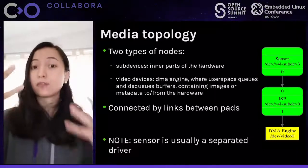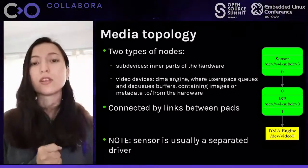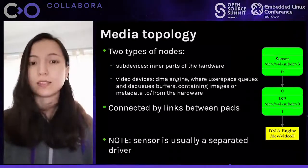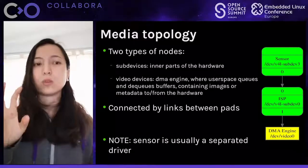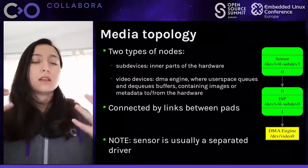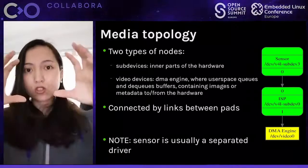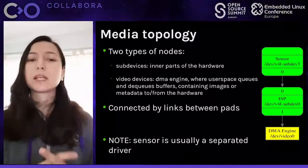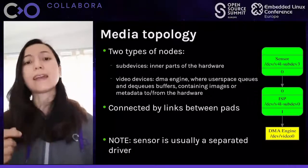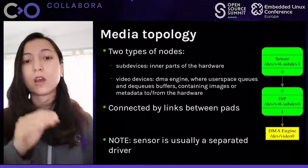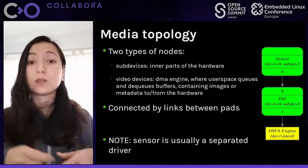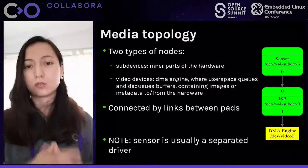In this example, we are retrieving an image from the sensor. We will also see examples where user space needs to inject an image or metadata into the driver. Blocks are connected by what we call links, and links always connect pads — the zeros and ones in the image. An interesting thing to note is that the sensor block is usually a driver separated from the rest, because we can reuse the same sensor with different hardware. In my development setup, I use the same sensor with both a Raspberry Pi and a RockPi board — the sensor is the same but the ISP driver is different.